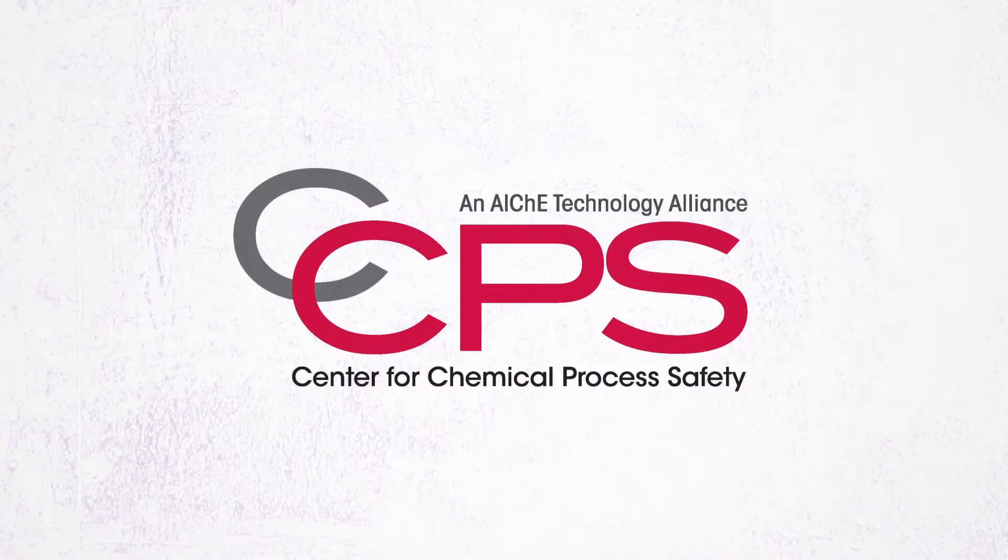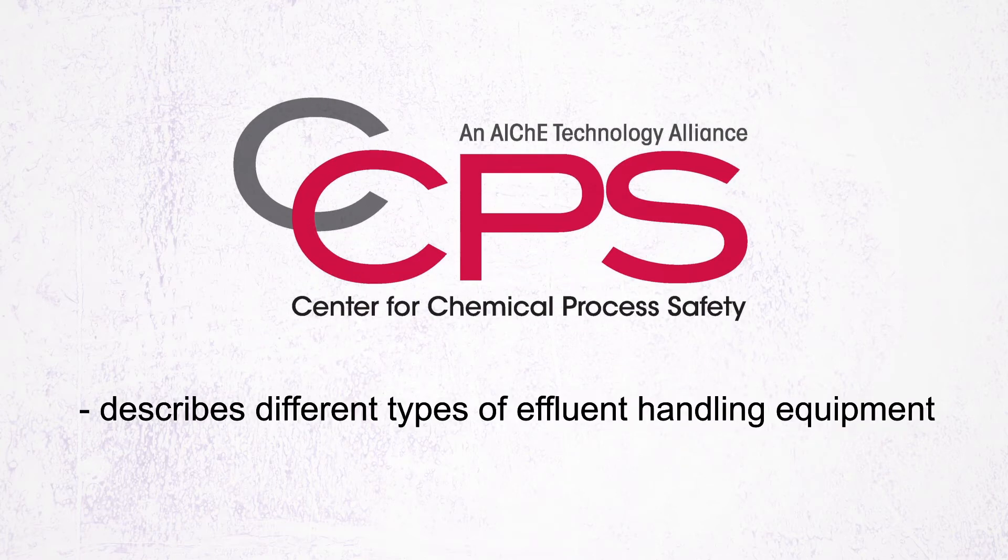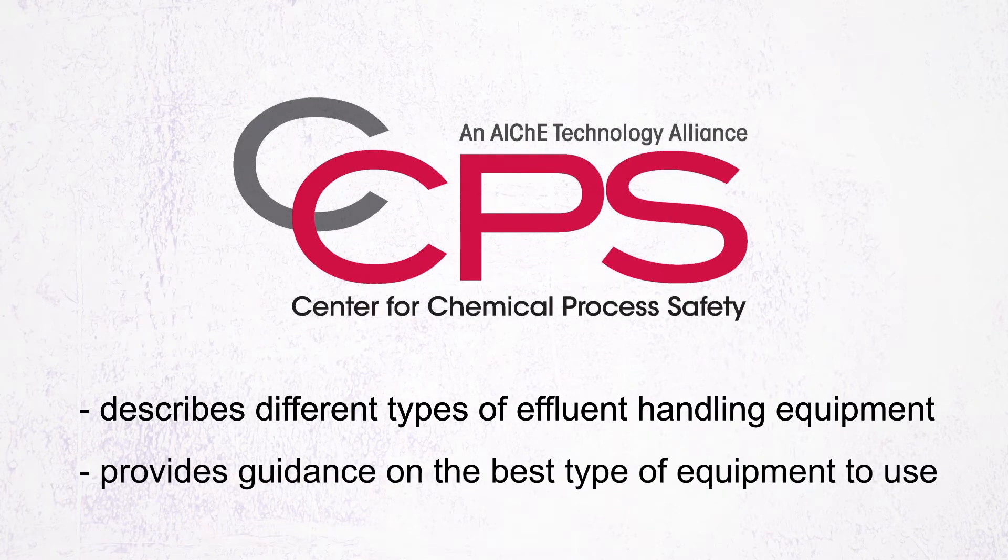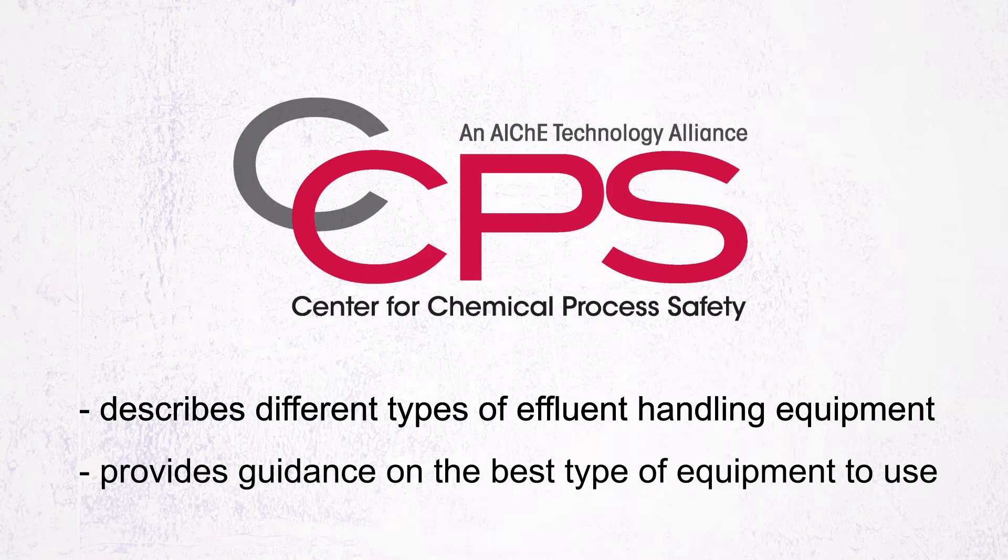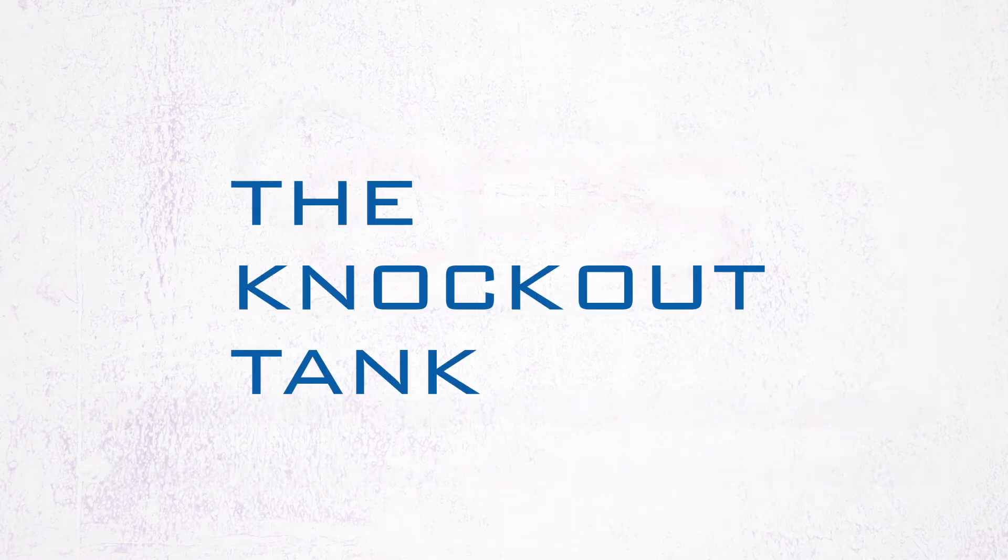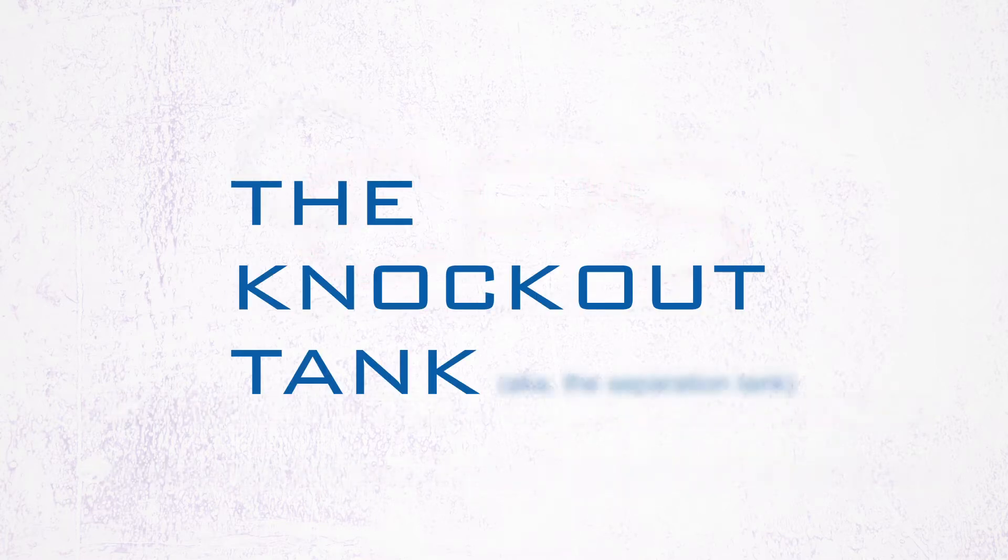The Center for Chemical Process Safety describes different types of effluent handling equipment and provides guidance on the best type of equipment to use. This video is intended to emphasize the key things to know for one specific type of effluent handling equipment, the knockout tank, which is sometimes referred to as the separation tank.